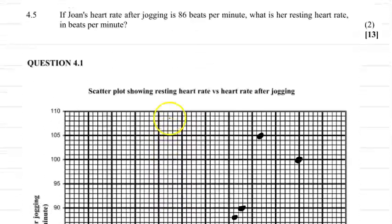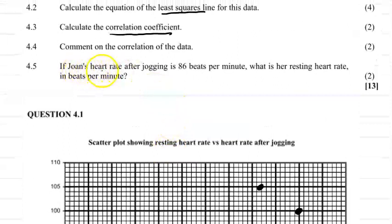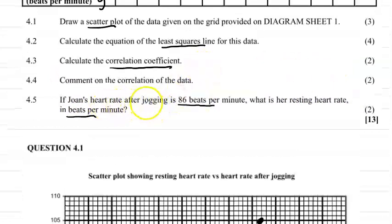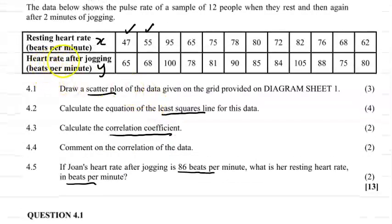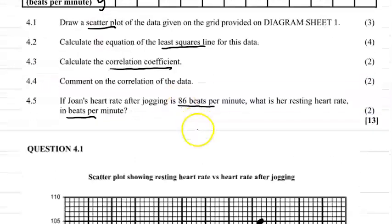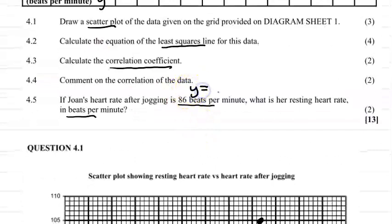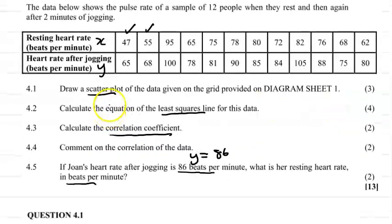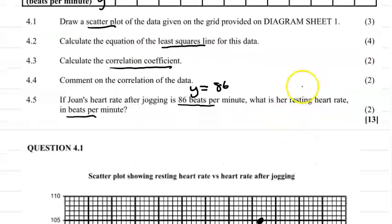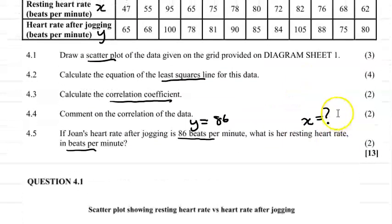4.5, if Jones' heart rate after jogging is 86 beats per minute, what is her resting heart rate in beats per minute? So 86 beats per minute is a heart rate after jogging, so the heart rate after jogging is the y. The y variable is going to equal to 86 and a resting heart rate in beats per minute is what we want to calculate.